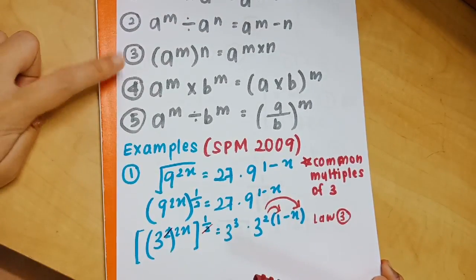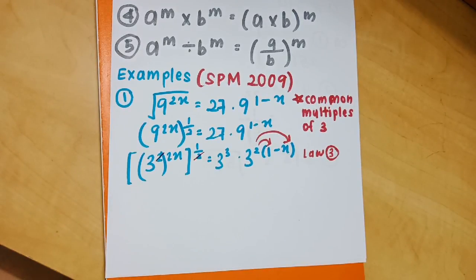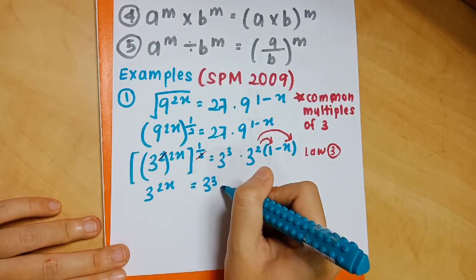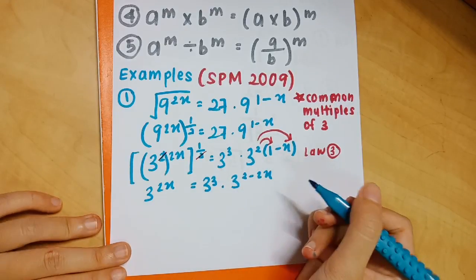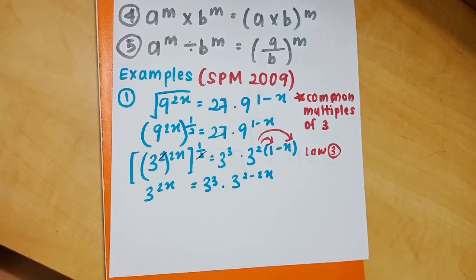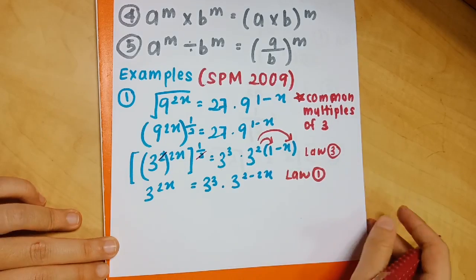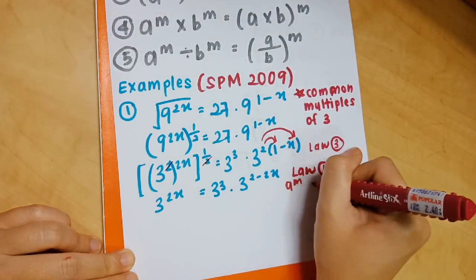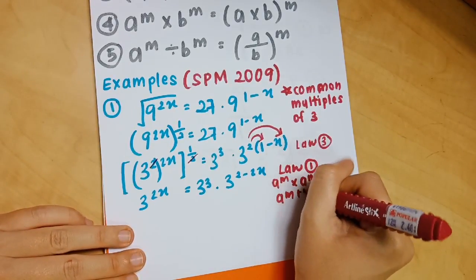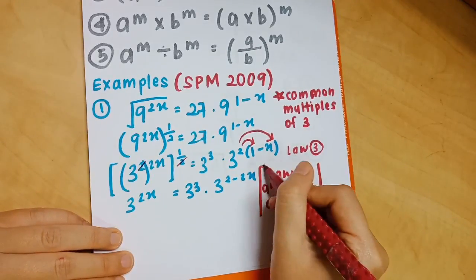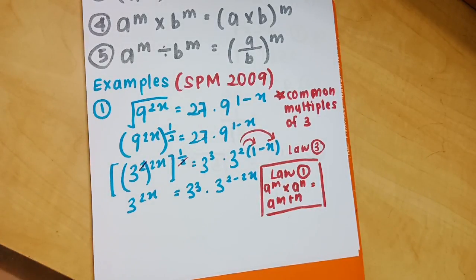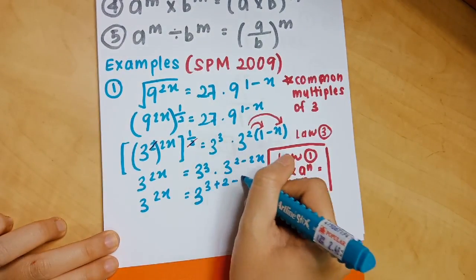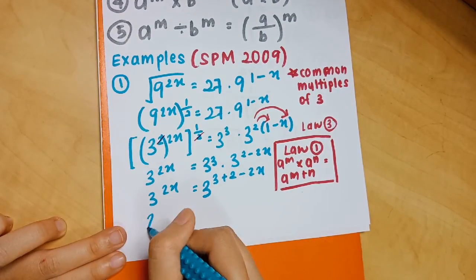The next step uses Law 3: (a^m)^n = a^(m×n). Expanding using the arrows, you get 3^(2−2x). Then applying Law 1 — a^m × a^n = a^(m+n) — you copy down the front part, and for the back part you're left with one factor of 3, giving the exponent as 3 + 2 − 2x.